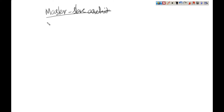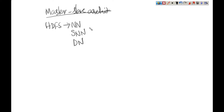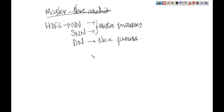In HDFS, the different processes that run are NameNode, Secondary NameNode, and DataNode. NameNode and Secondary NameNode are the master processes, and DataNode is the slave or worker process. To form a cluster, at least one master process and multiple slave processes are required.